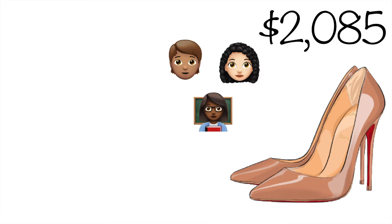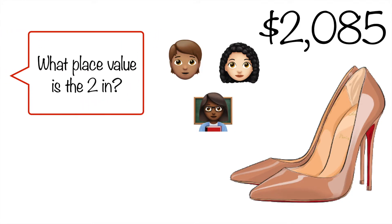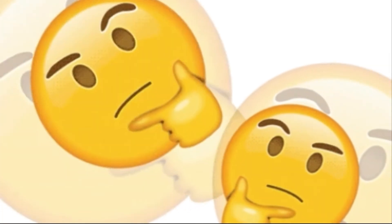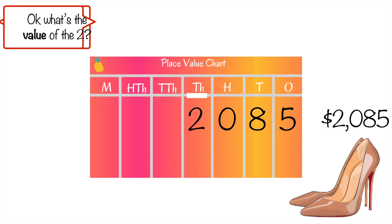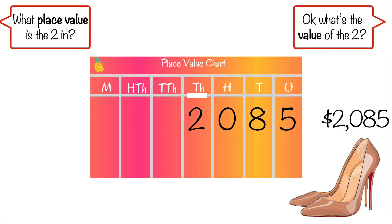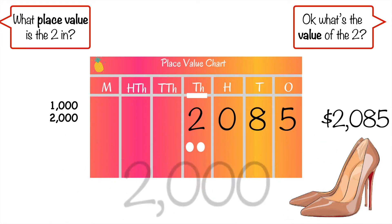But you got it. Then all of a sudden, you hear your teacher in the back of your head ask you: which place value is the 2 in? Well, let's put it in the place value chart and see. Now we can easily see that the 2 is in the 1,000th place. Then she says, what's the value of the 2? Let's count by thousands and see. 1,000. 2,000. Easy. The value of the 2 is 2,000.